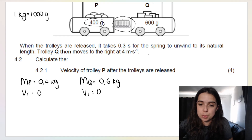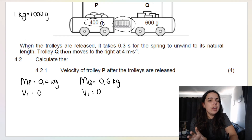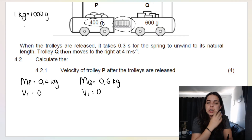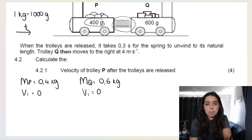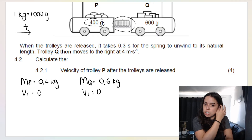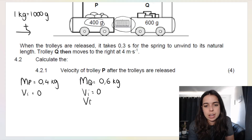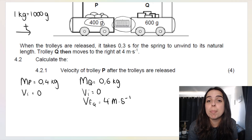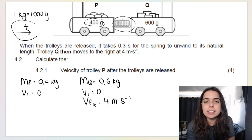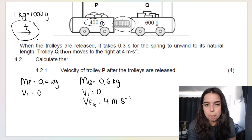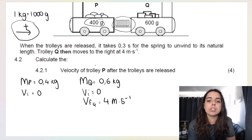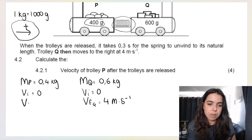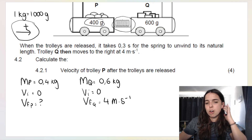I'm going to take to the right as my positive direction. Trolley Q moves to the right, so vf of Q = +4 m/s — substituted as positive because right is positive. Please always indicate what you choose as positive. They want the final velocity of P, so I'll mark that as my unknown — a question mark.